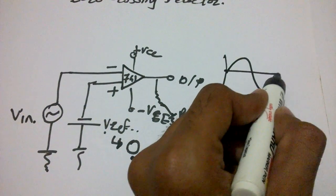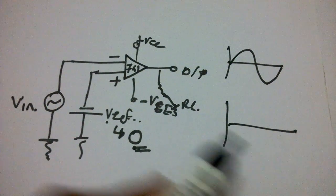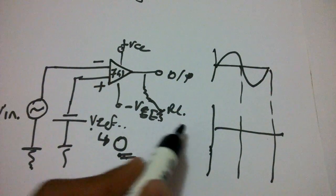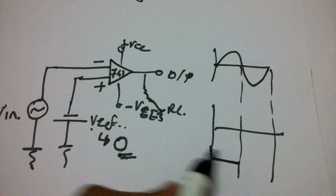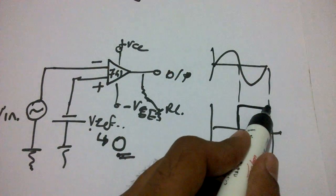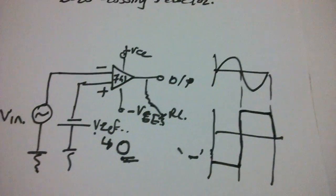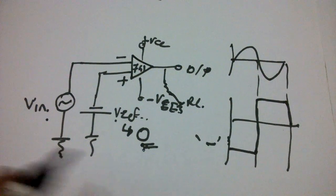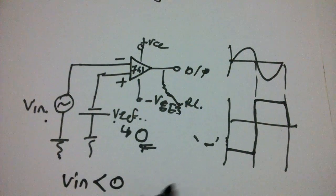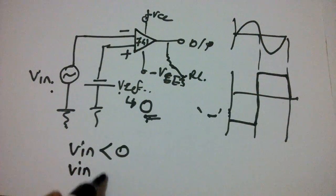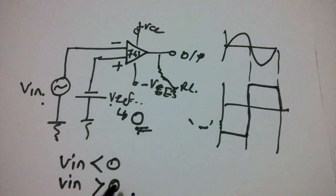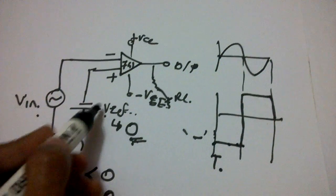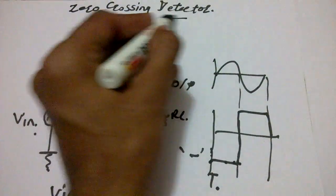This is the basic sine wave of our input signal, and this is the complete output waveform from this system. As we provide the input to the inverting terminal, when the signal crosses zero it provides the output. Since the input is provided to the inverting terminal, the output follows from negative to positive accordingly. The system compares the input voltage with zero — when V-in is less than zero, no output signal; when V-in is greater than zero, there is output. It shows when and where the input crosses zero, hence it is called a zero crossing detector.